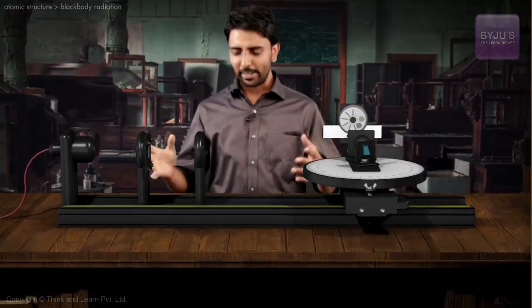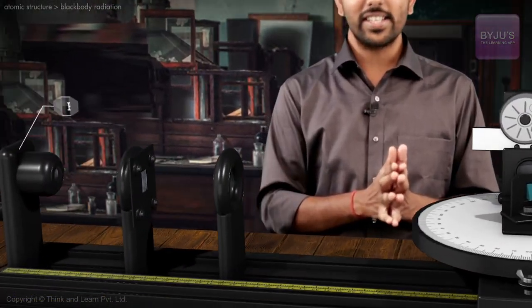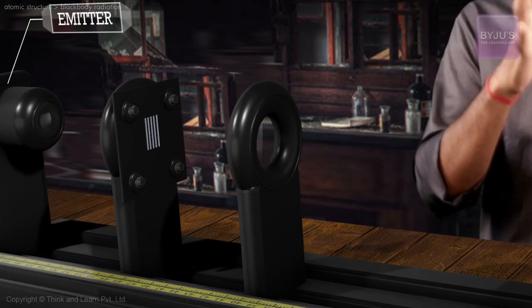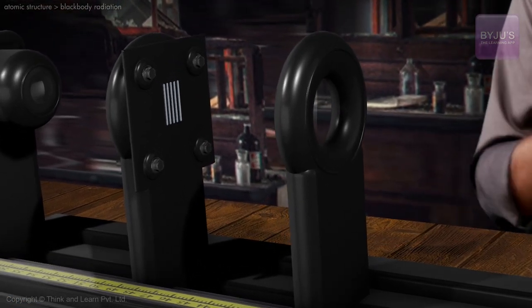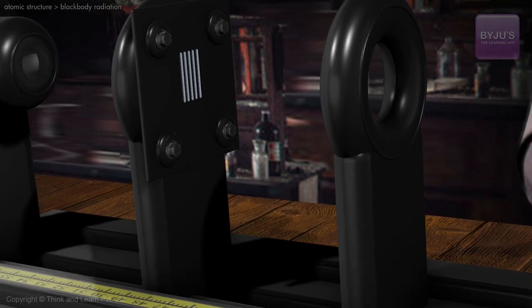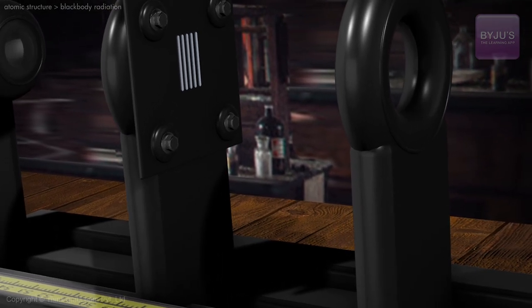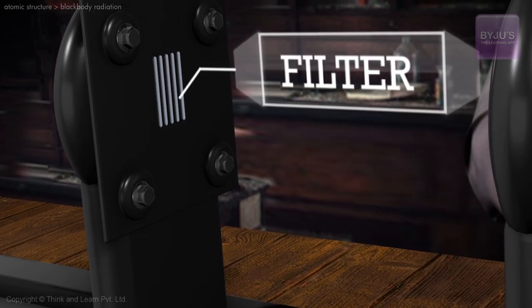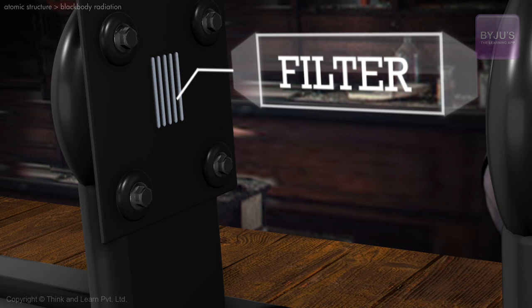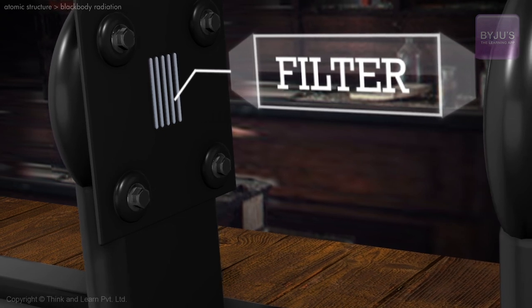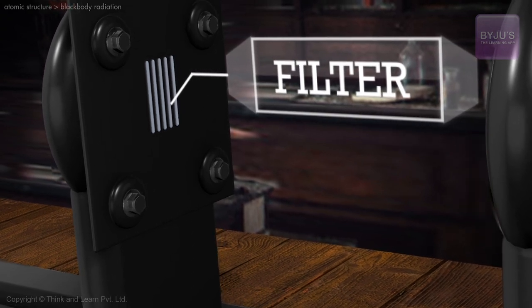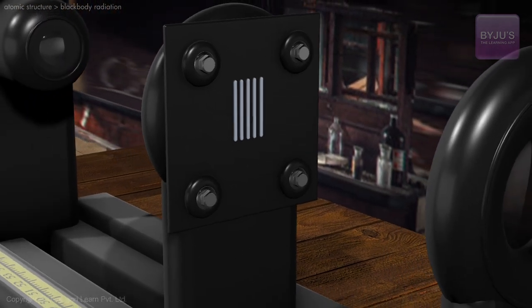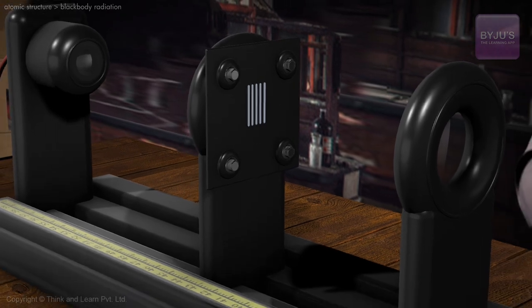Take a look at this experimental setup. We have an incandescent emitter. Using electrical parameters, we can change the temperature of the radiation which is emitted. Here we have a wavelength filter. For a particular temperature, there is radiation incident on the filter. Using this filter, we can choose a very specific wavelength to pass through, whereas the other wavelengths are shunned out.